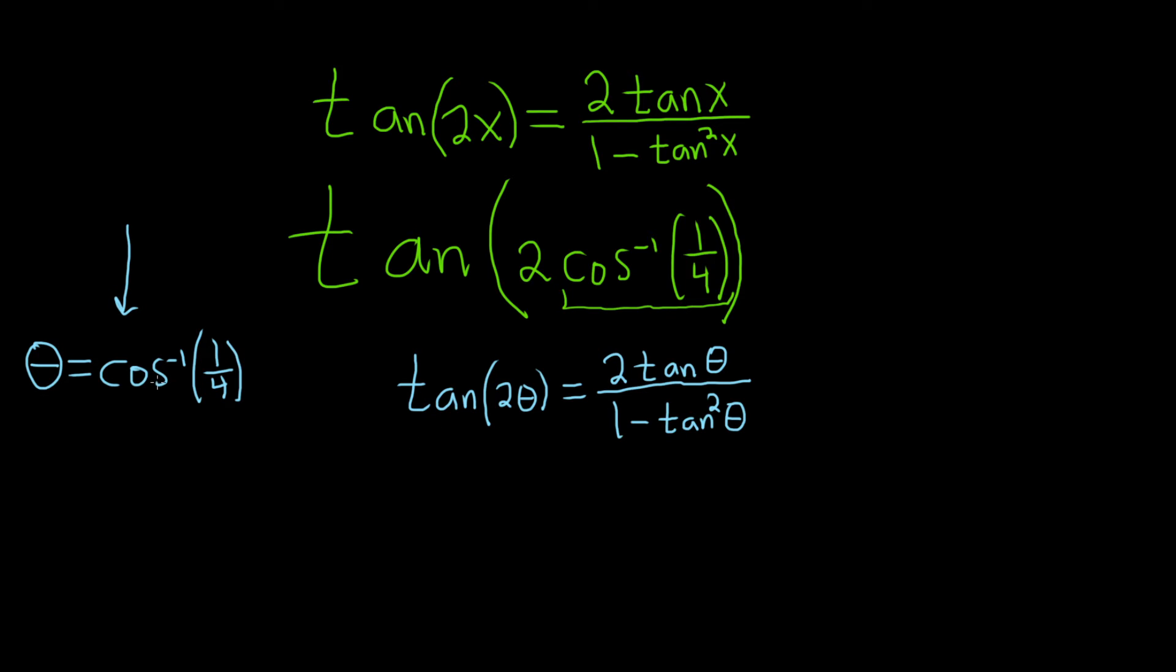So to draw a triangle for theta, we need to get rid of this cosine inverse. To do that, we can just use the definition of the inverse function. So the cosine inverse takes 1/4 and it gives you theta. So the cosine function should undo that. The cosine is the inverse of the inverse.